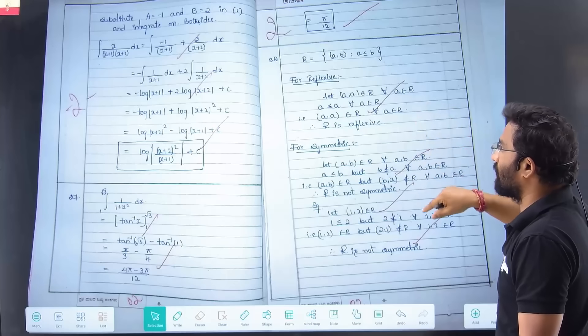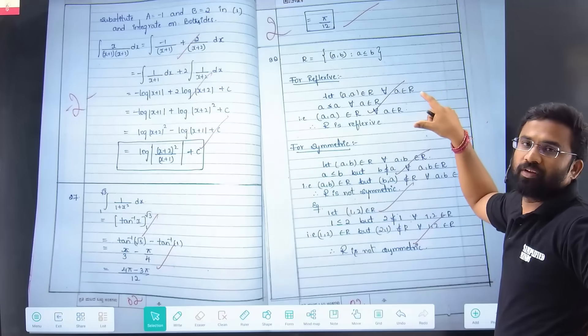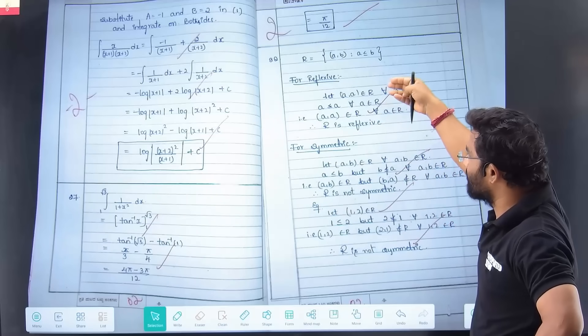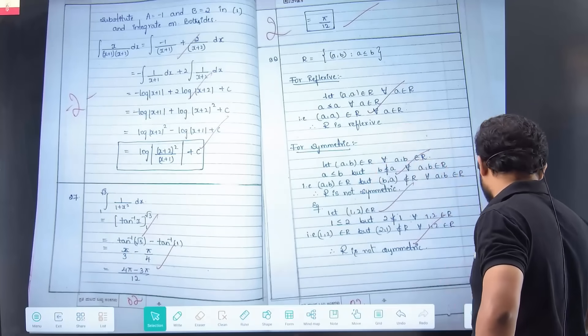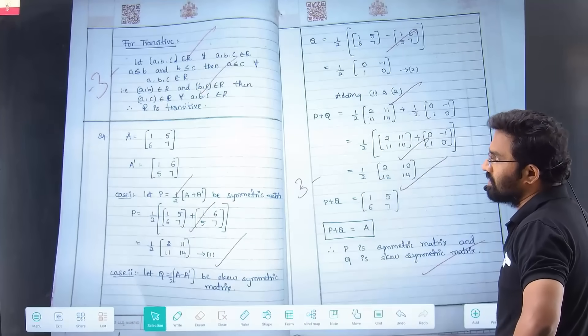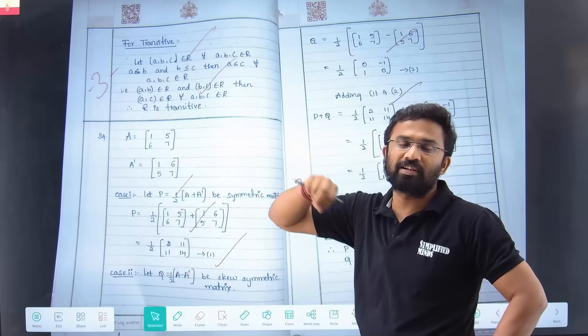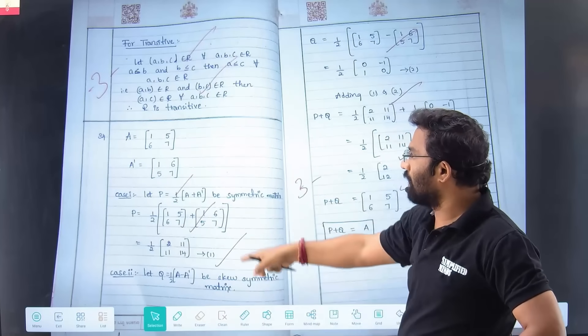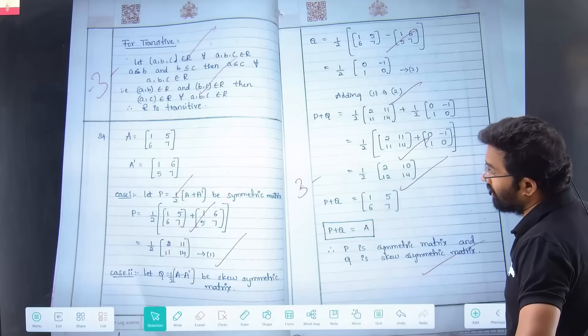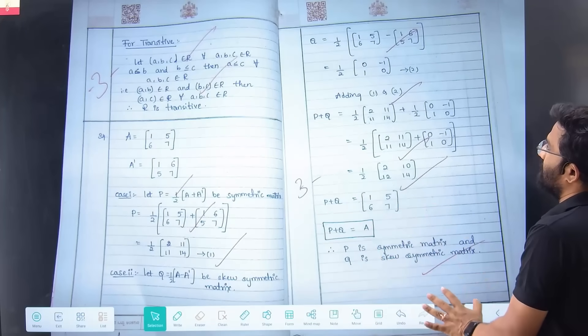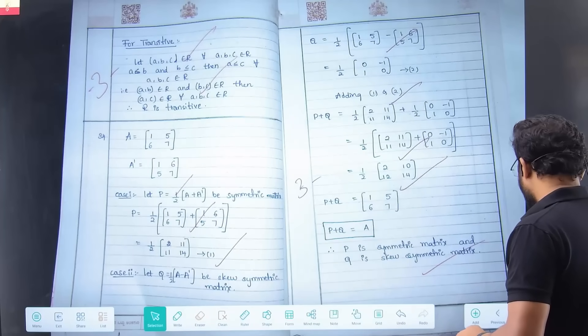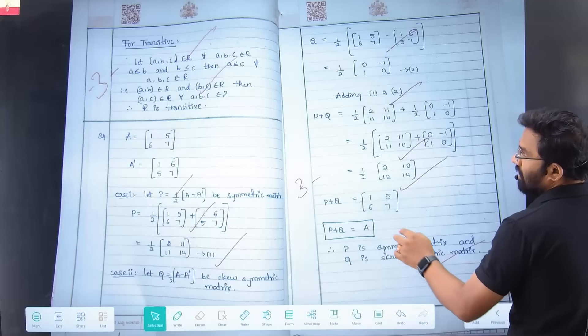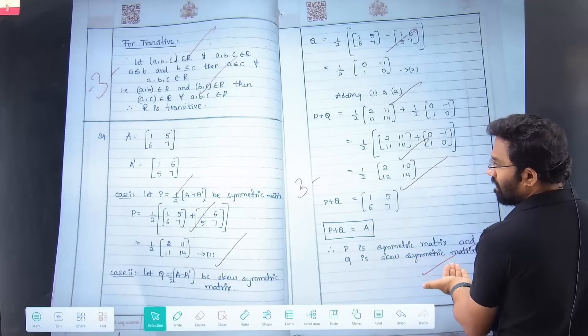This kind of question is three marks usually - reflexive, symmetric, transitive properties. Don't just write one sentence, they won't give three marks. Write what is reflexive, symmetric, and transitive. You have to write statements properly - at least two to three sentences for each. At the end, always write what is asked. For example, if they ask whether P is symmetric matrix and Q is symmetric matrix, you have to write that it is symmetric.